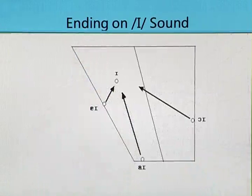Now look at this figure. This is the second group — this is the triangle on your vowel triangle.